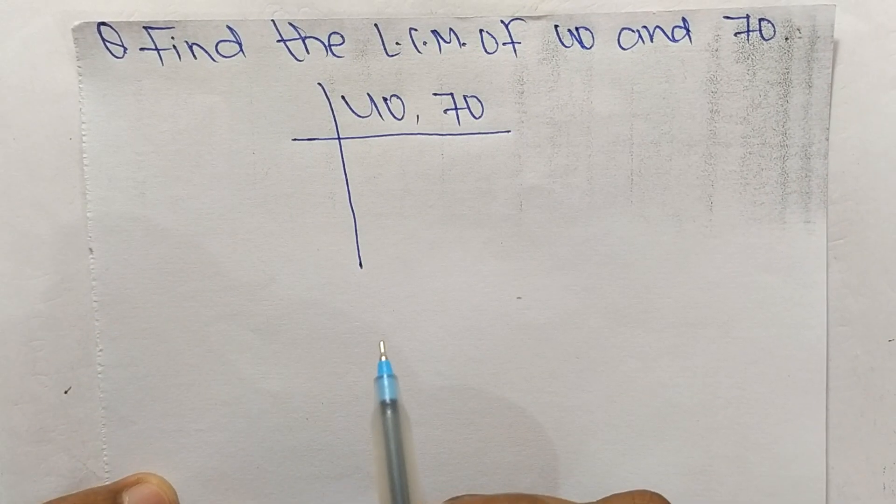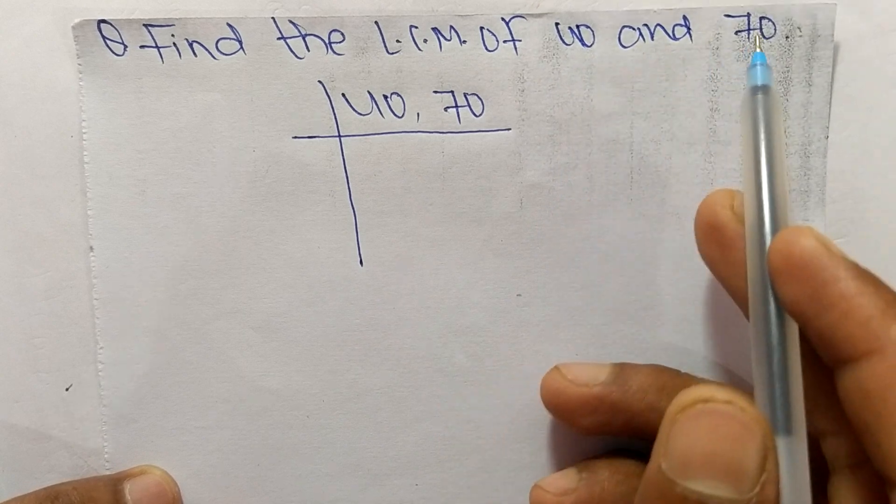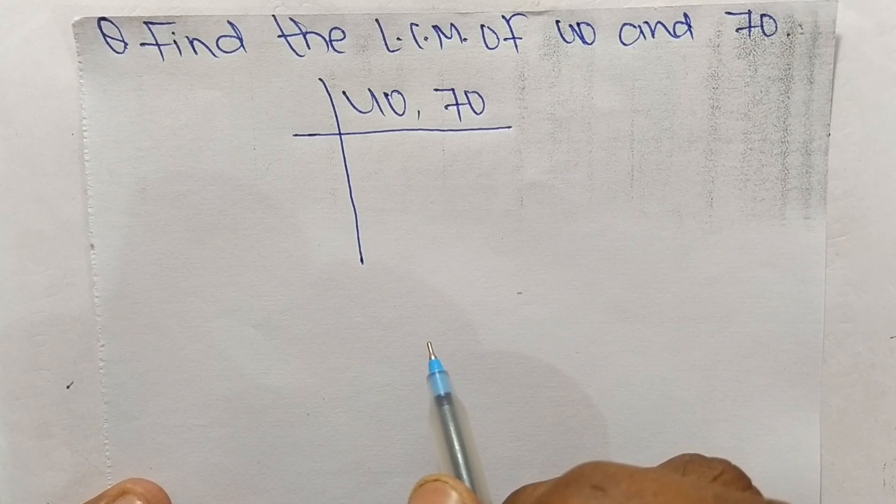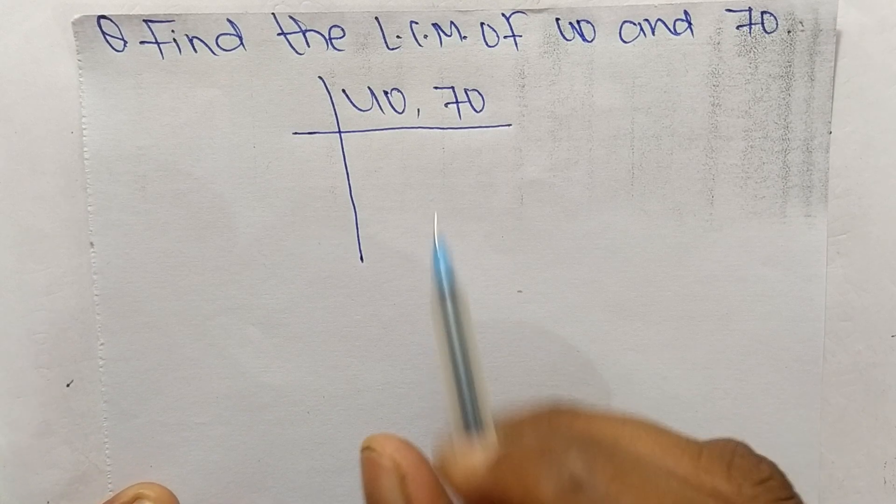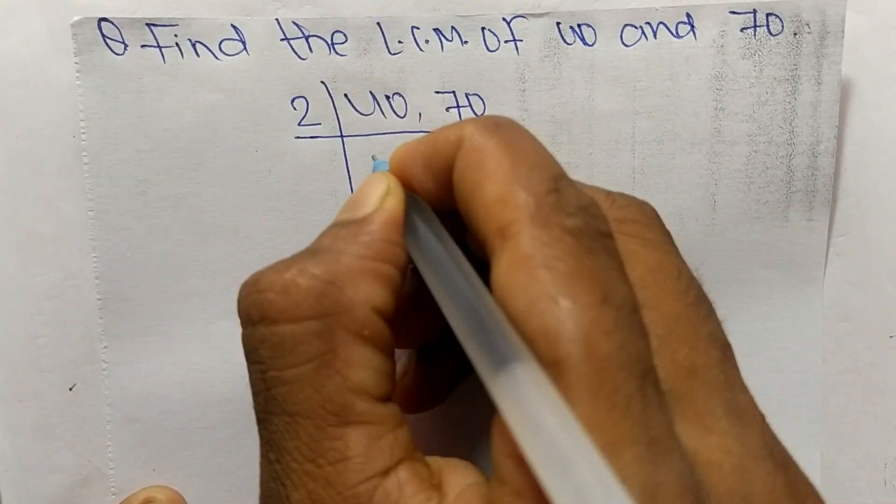So today in this video we shall learn to find the LCM of 40 and 70. To find LCM, first we choose the lowest number that can exactly divide 40 and 70. So the number is 2.